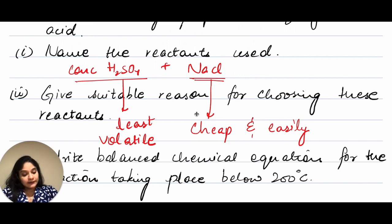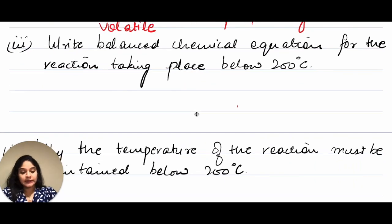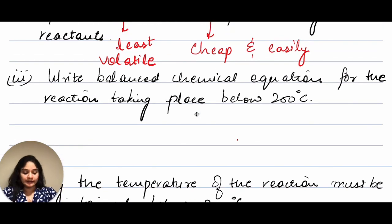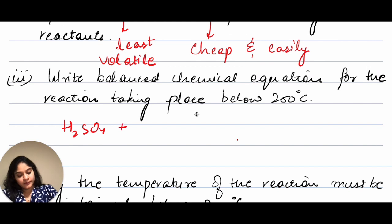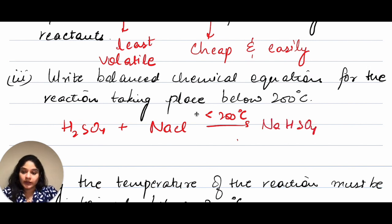Write a balanced chemical equation for the reaction taking place below 200 degrees Celsius. Below 200°C, H₂SO₄ plus NaCl gives NaHSO₄ — sodium bisulfate — plus HCl. This is the reaction that we generally use in the lab.